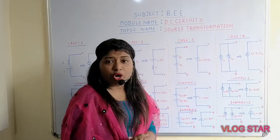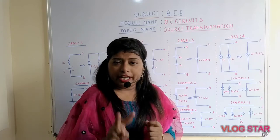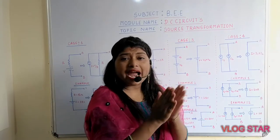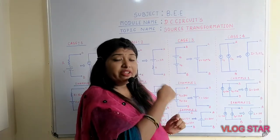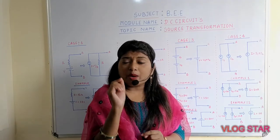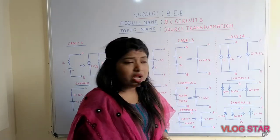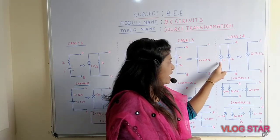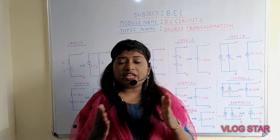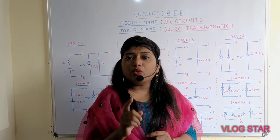Coming to the last important case — case number four: if two current sources are connected in parallel, they can be added or subtracted depending upon the direction of the current. In the previous case it was about polarities; in case number four it is about direction. As you can observe in the diagram, if both currents are in the same direction — for example, both upward — you simply add them.